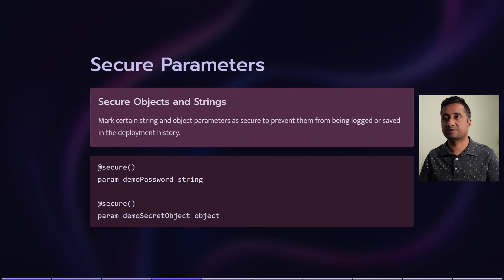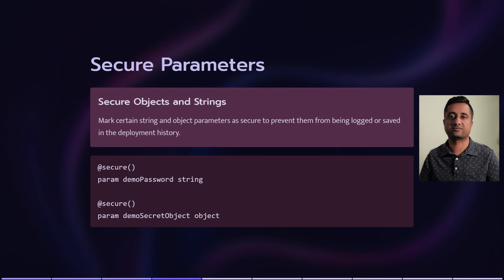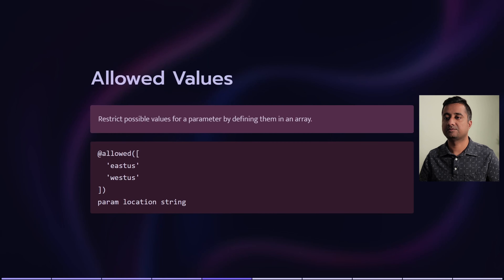The next one we are looking into is decorators. Decorators are typically used for description, or you could use them to mark a particular parameter as a secure string.